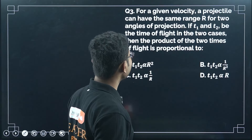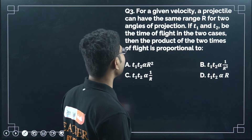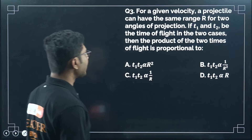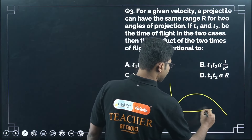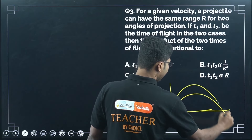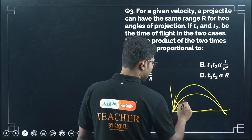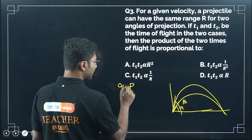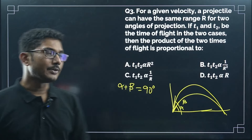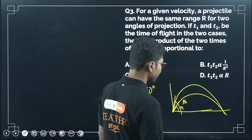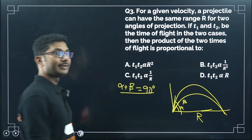Question 3: for a given velocity, a projectile can have the same range R for two angles of projection. If t1 and t2 are the times of flight in the two cases, the product t1·t2 is proportional to what? For the same initial velocity, two projectiles have the same range when their angles of projection are complementary, meaning alpha + beta = 90 degrees.